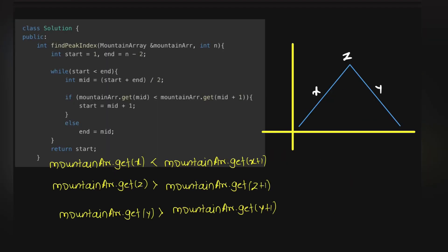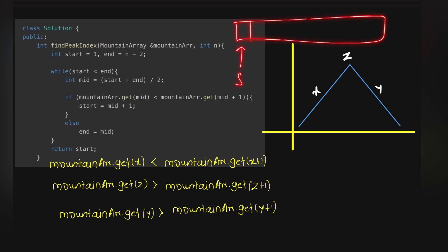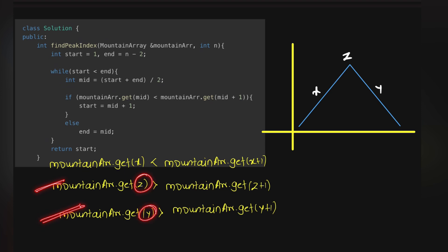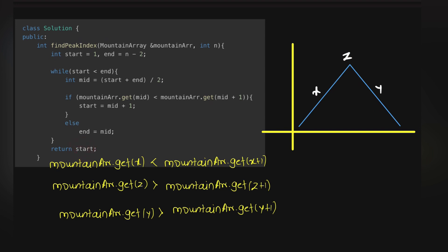Now let's look at the C++ and Java code. The peakIndex function takes the mountain array and its size, uses start and end pointers, computes mid, and if mountain.get(mid) < mountain.get(mid+1) it sets start = mid+1 (we're in the increasing section). Otherwise it sets end = mid. Finally, start points to the peak index and is returned.